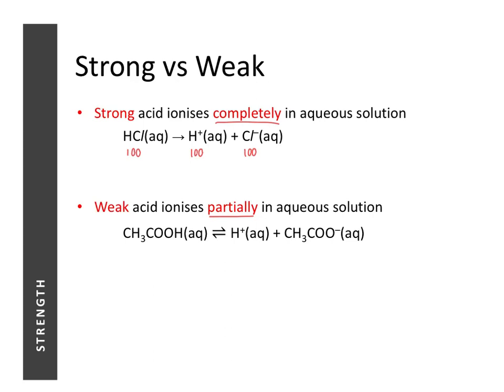For ethanoic acid, if we have 100 units, only one unit will actually undergo dissociation to form one unit of hydrogen ions and one unit of ethanoate ions. The remaining 99 units remain as the unionized form. Because it only produces a little hydrogen ions, we call it a weak acid.